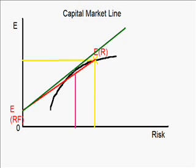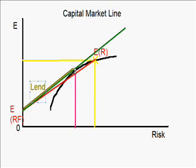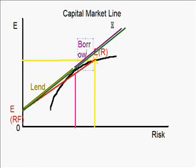If an investor invests in the region below the market portfolio on the capital market line, we say they are deleveraging — they lend out some of their money into the risk-free asset rather than investing it all in the stock market. In the region above the market portfolio, we say the investor is leveraging their investment, meaning they borrow money in order to buy more stocks.